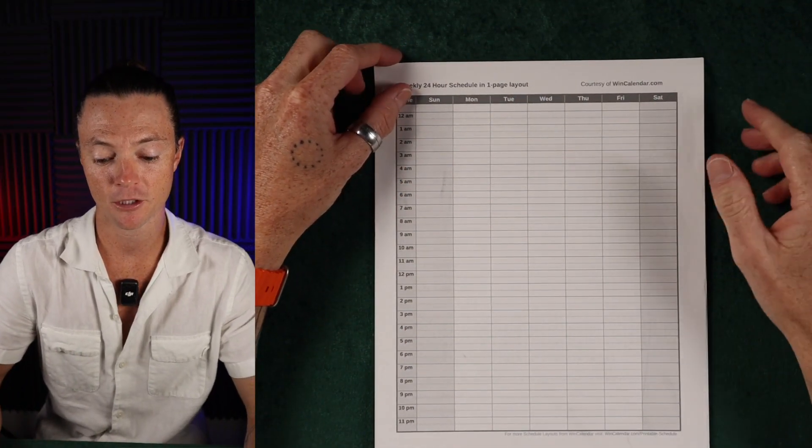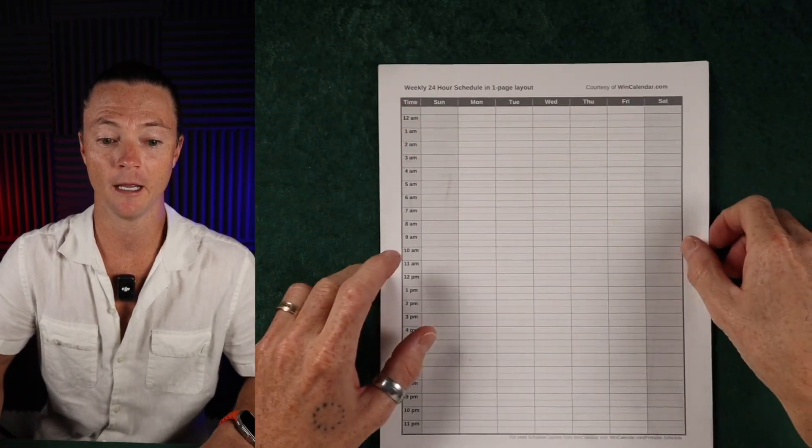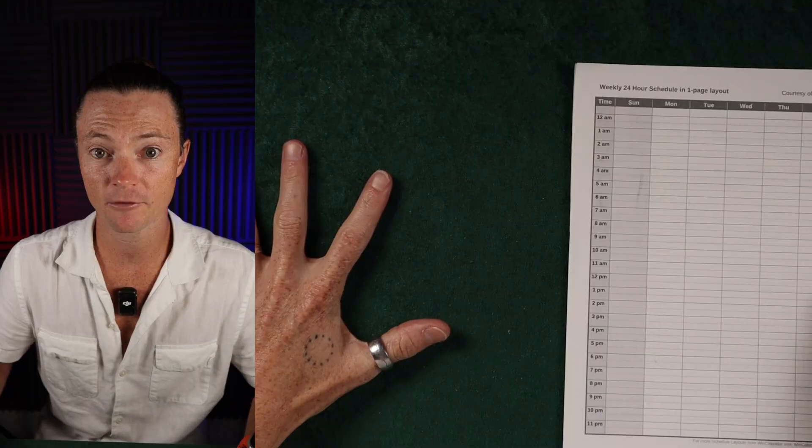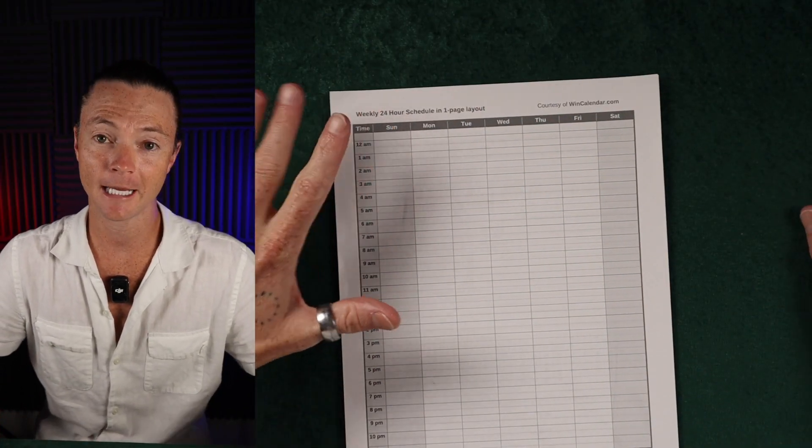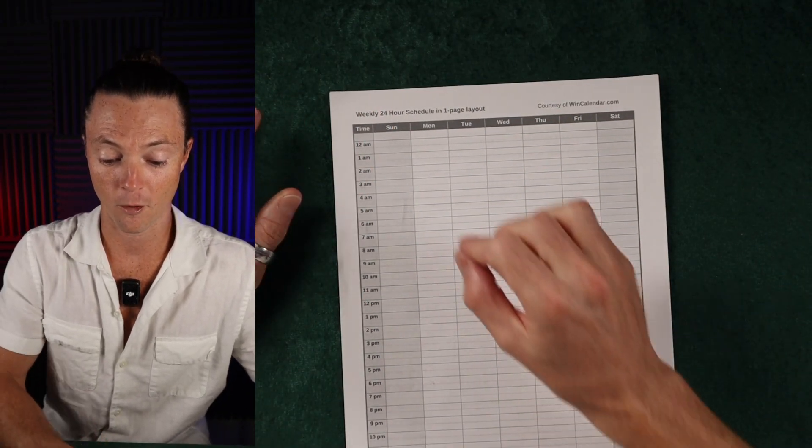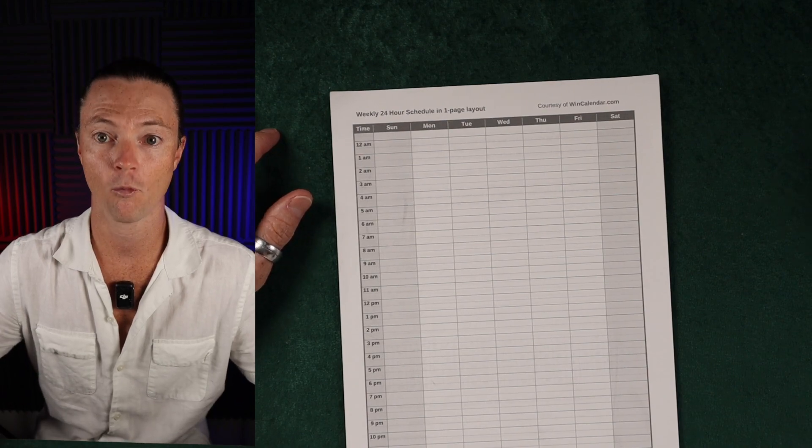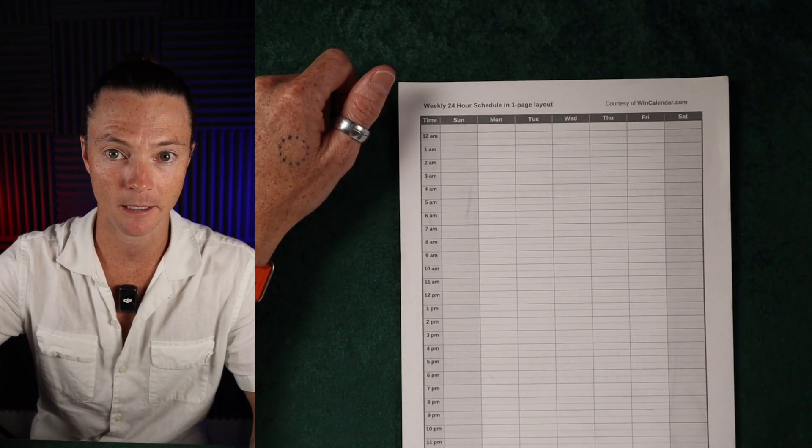The second thing you're going to do is get another one of these, a blank one, and put it next to the one that you have tracked, and then plan your time. Looking at how you're spending your time, write down how you would want to spend your time. What could you move around? What could you get rid of? What do you need to add to get to where you want to be?